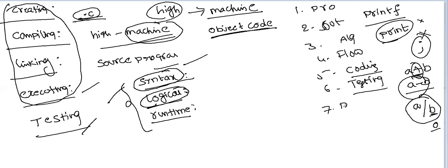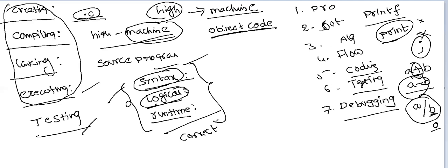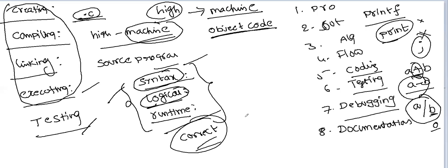Once testing is completed, you have to do debugging. Debugging means correcting those errors — testing is used to identify the errors, and correction of those errors is called debugging. After debugging, the next step is documentation. Documentation means maintaining the information: the format of input, format of output, the operation to be performed, and the logic of the program — everything is maintained in a document format for future reference, so that you can revisit the program and understand it later.